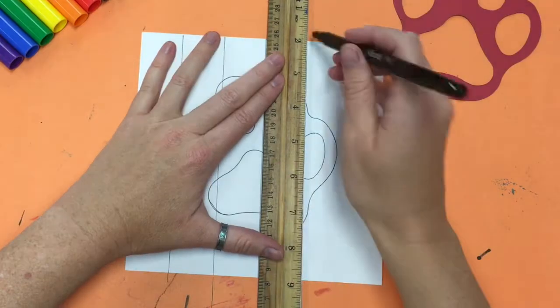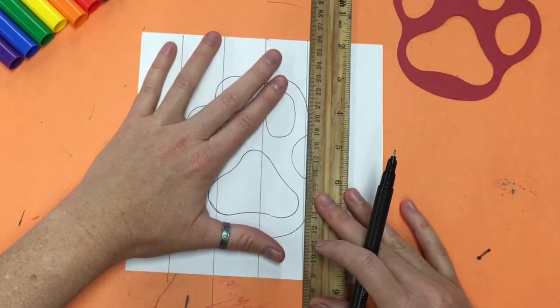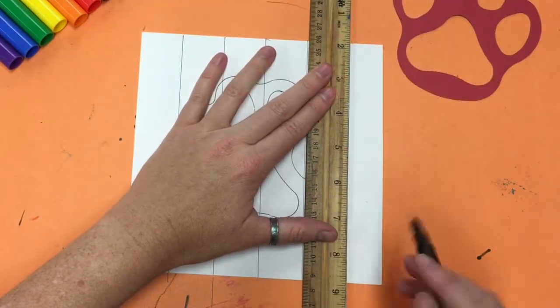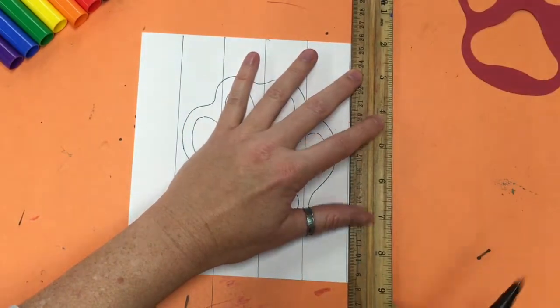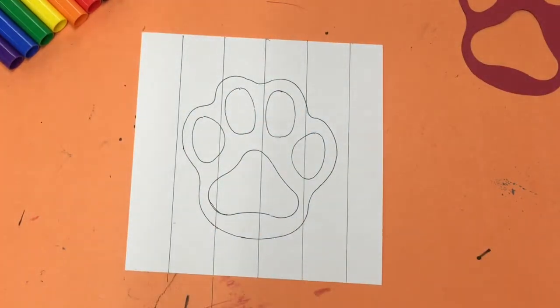Make another line by moving the ruler so that the edge of it lines up with the new line you just drew. Keep going until the ruler doesn't fit on the paper anymore. I was able to get five lines on my paper.